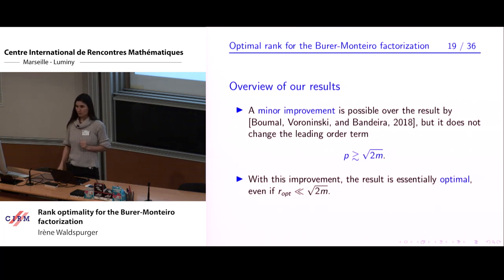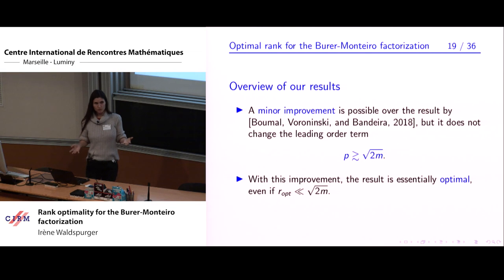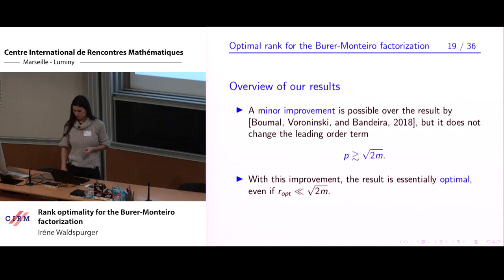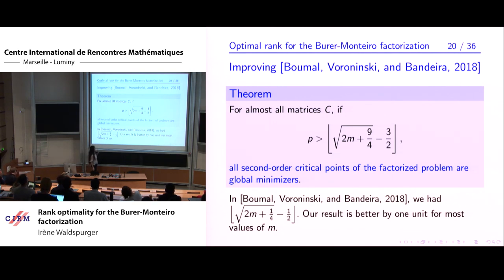With this improvement, the result is essentially optimal: even if you assume the optimal rank is 1 — the smallest possible — then if P is smaller than sqrt(2m), there are situations with bad cost matrices C for which Riemannian optimization algorithms can fail. The slight improvement is: we can have the same theorem as Boumal, Voroninski, and Bandeira, replacing their lower bound with sqrt(2m + 9/4) - 3/2. This lower bound is strictly better, but generally the two bounds differ by only one unit, so unless m is very small, it's not very interesting.